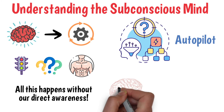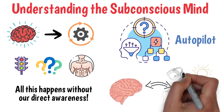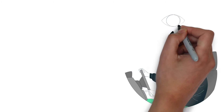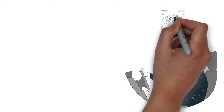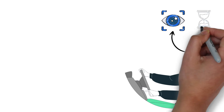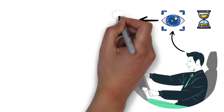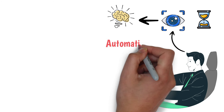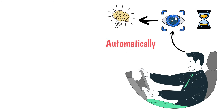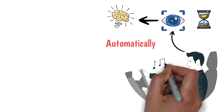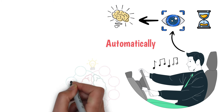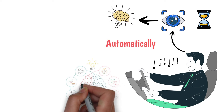Think of the subconscious like fertile soil, where all our thoughts, actions, and eventually our destiny grow from. Consider the skill of driving a car. Initially, driving requires intense focus and conscious thought on every action, from steering the wheel to changing gears. However, as you become more experienced, these actions transition into the realm of the subconscious mind, allowing you to operate your car almost automatically while the conscious mind engages in other activities, such as talking to passengers or enjoying music. This shows the incredible efficiency and capacity of the subconscious mind in learning and adapting.